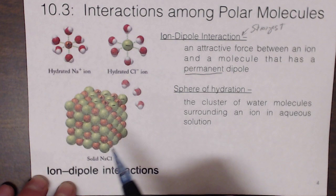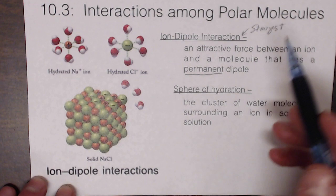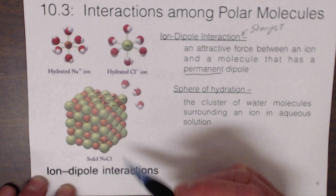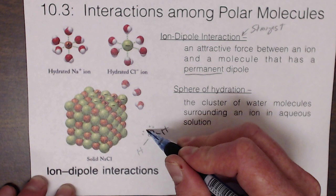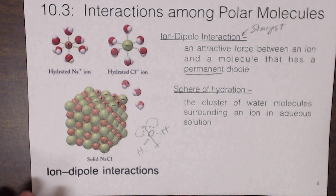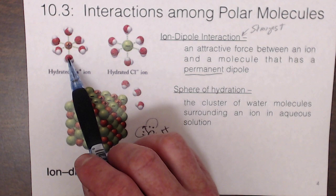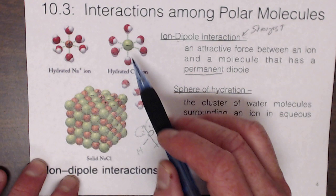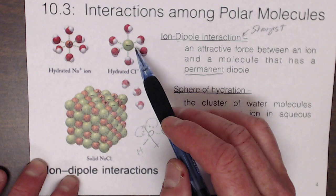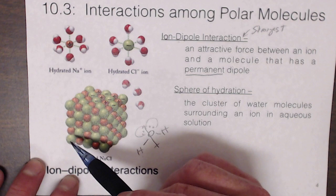Consider a salt crystal held together by strong negative-positive interactions. When salt dissolves in water, the VSEPR shape of water makes it very polar. For sodium, the negatively charged oxygen atoms align with the positive cation — the dotted line indicates the ion-dipole interaction. For chloride, the positively charged hydrogens align with the negatively charged ion. Opposites attract, which is why water dissolves salt so readily.